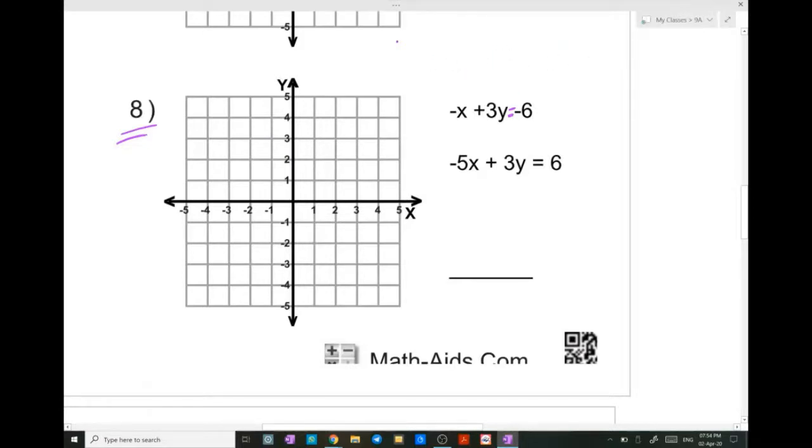So we start with the table of intercepts. When x is 0, y is minus 2, and when y is 0, then x is 6.